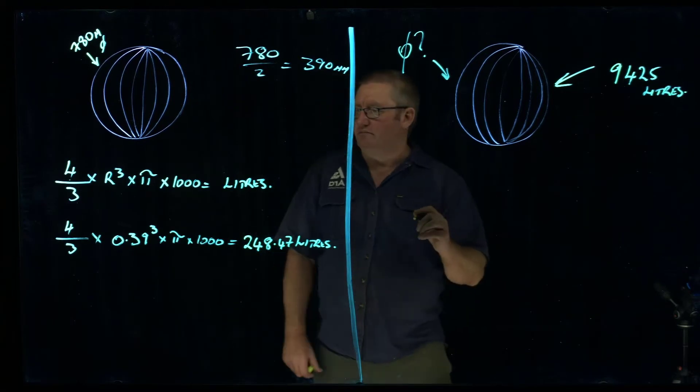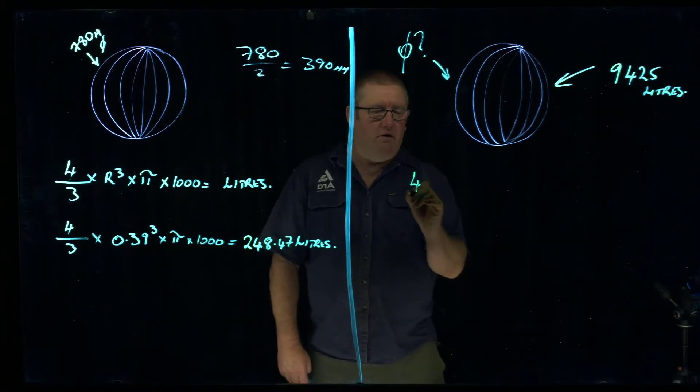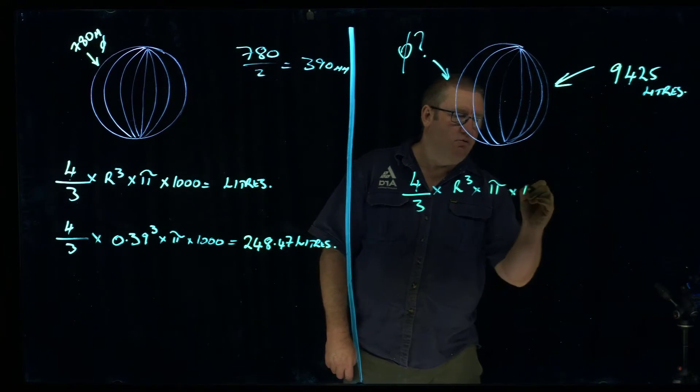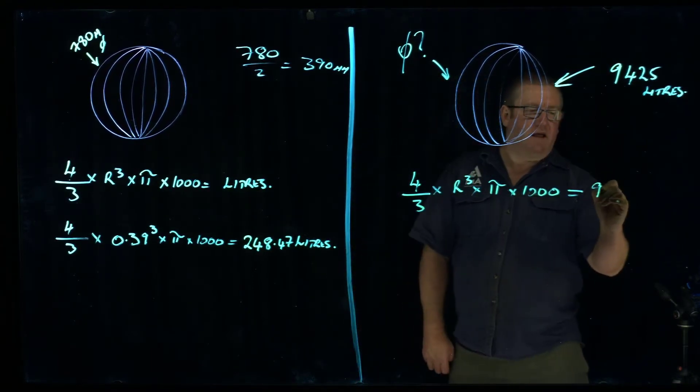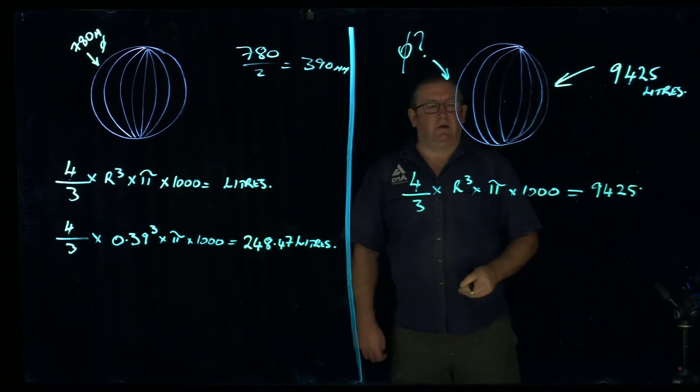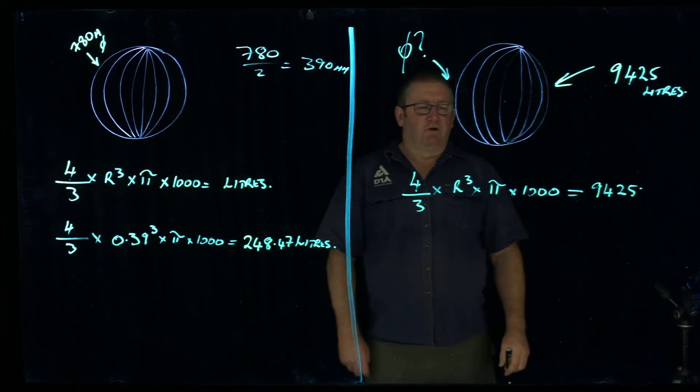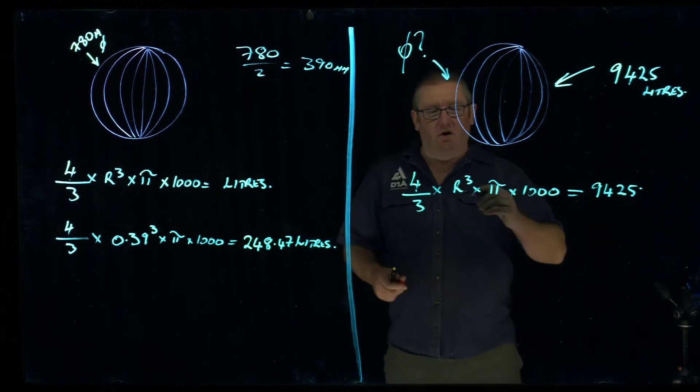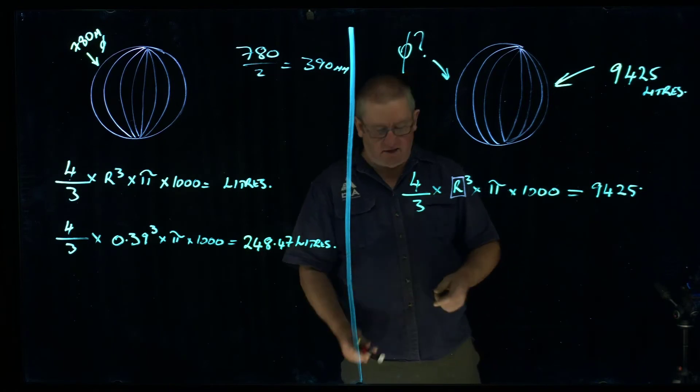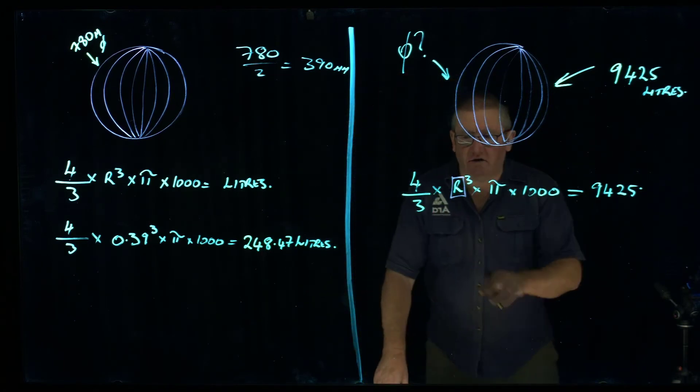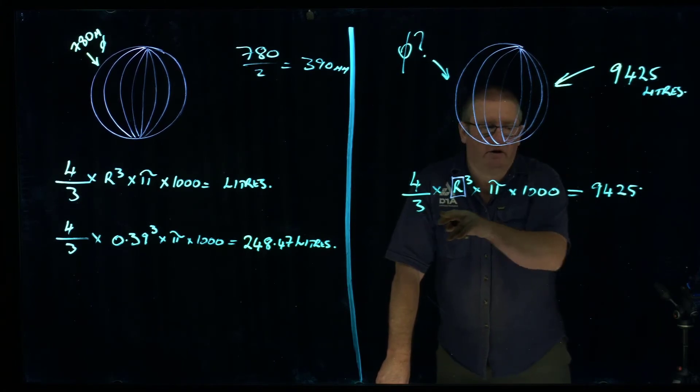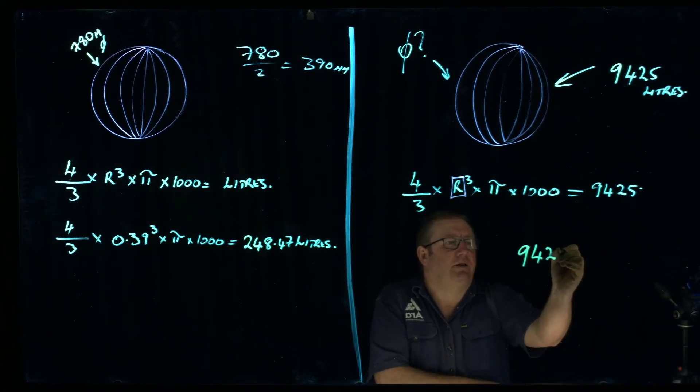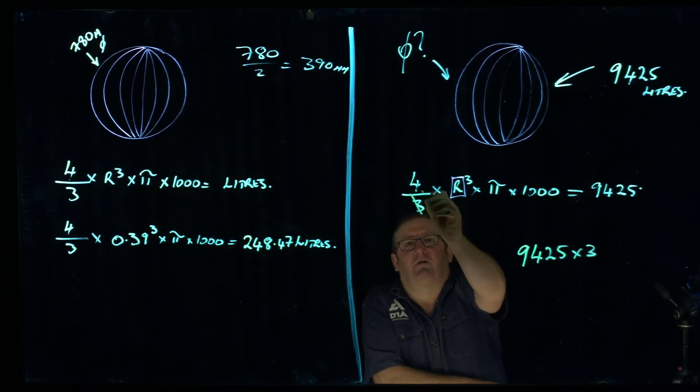Exactly the same formula. So we've got 4 over 3 times R cubed times pi times 1,000 equals 9,425. So what we need to do is transpose the formula. So what we need to do is get rid of the 3 for a start. It's dividing on this side. When it goes to the other side of the equal sign, it becomes a multiplier. So what we end up with is 9,425 times 3. So that's got rid of that component.